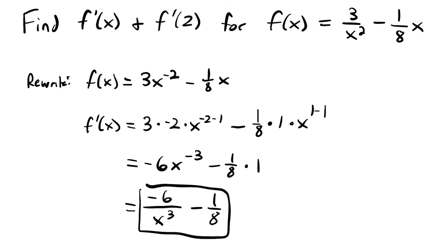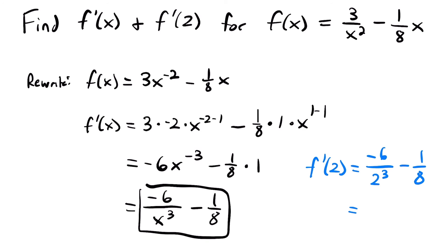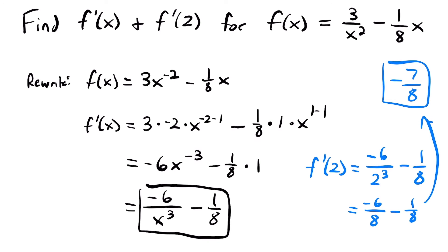Now we find f prime of 2 by plugging 2 into the derivative. We have negative 6 over 2 to the third power minus 1/8, which equals negative 6 over 8 minus 1/8, giving us negative 7/8. That's all there is to know about the basic derivative rules. If you want to see more examples, I'll have an example video linked at the end and in the description. If you have any questions, leave them in the comments — see you next time.